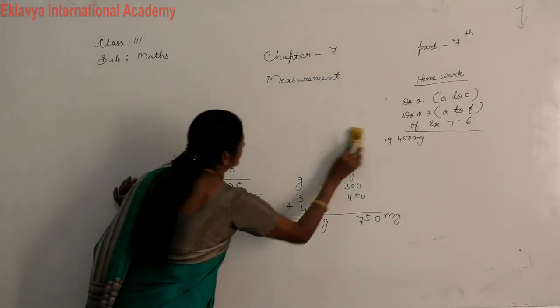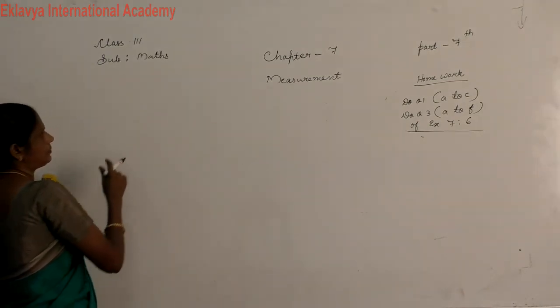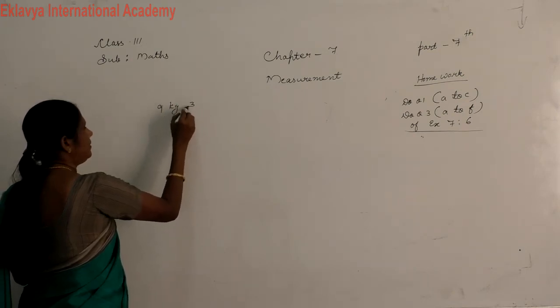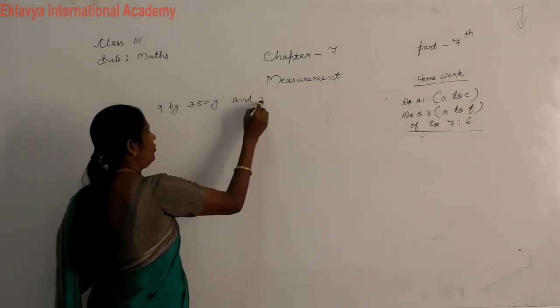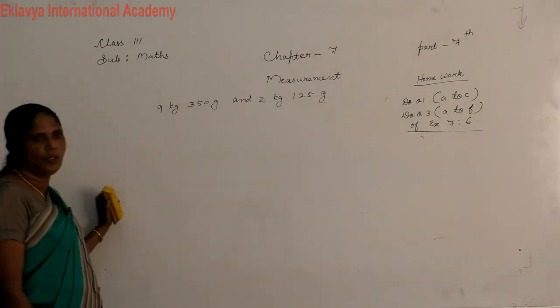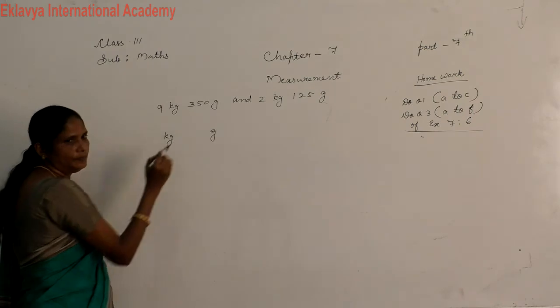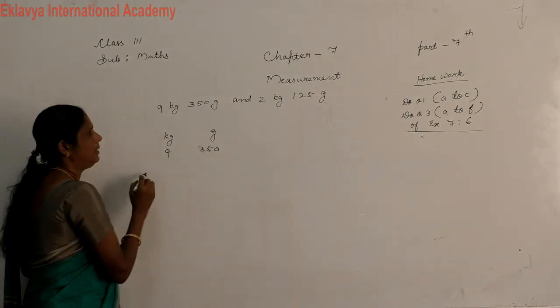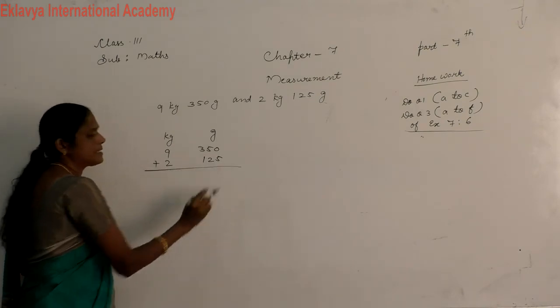Again 9 kg, 350 gram and 2 kg, 150 gram. Now, you arrange this number. Now 9 kg, 350 gram, then 2 kg, 125.